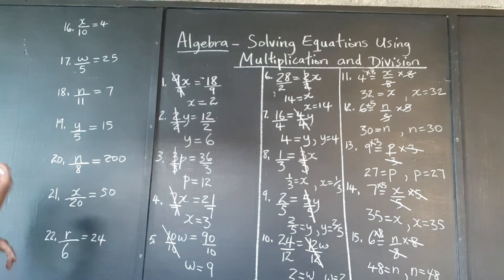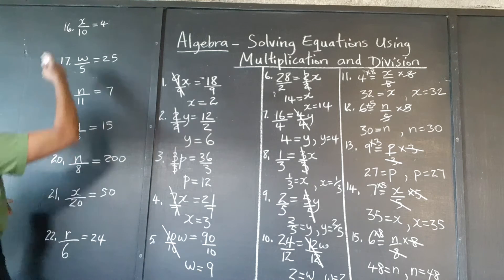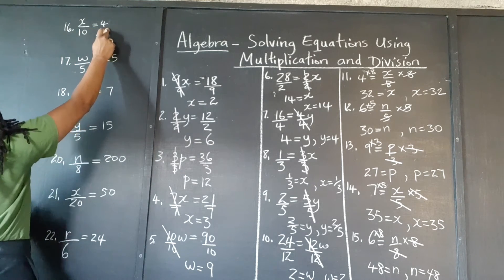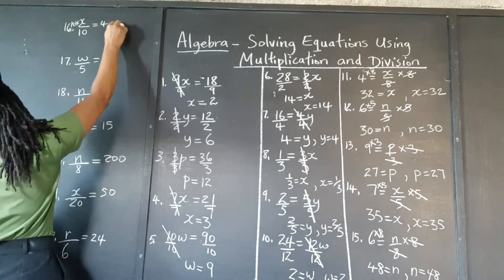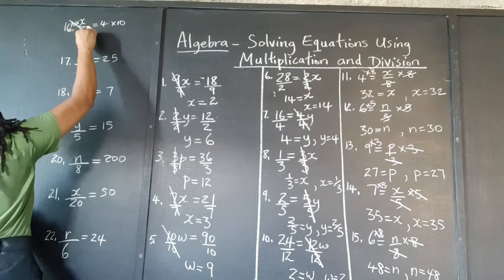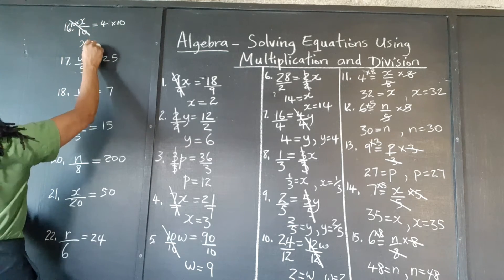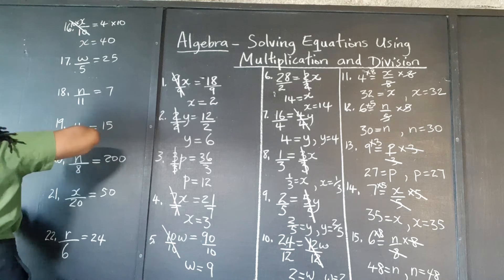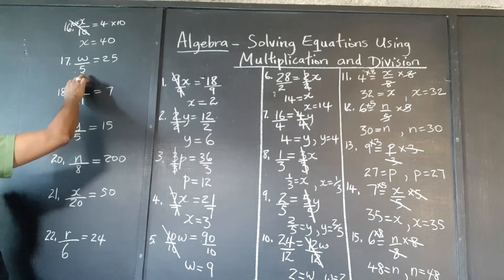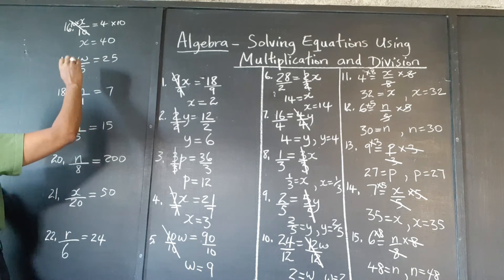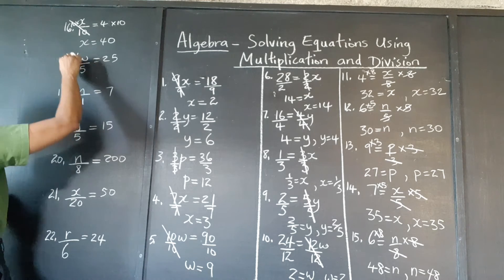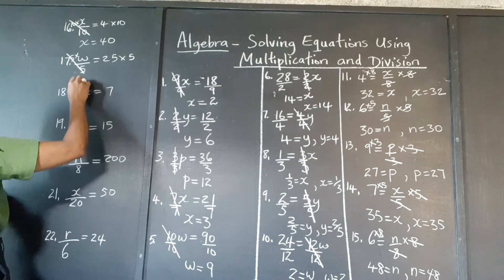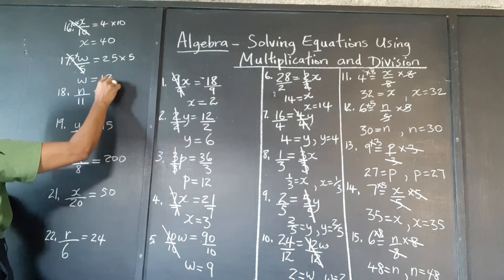We have a couple more to go. Same principle: which number divided by 10 is 4? We're going to multiply both sides by 10. These 10s cancel out. x is equal to 40. Next: w divided by 5 is 25. Multiply both sides by 5. The 5s cancel out. 25 times 5 is 125.